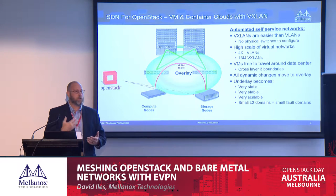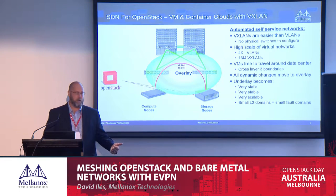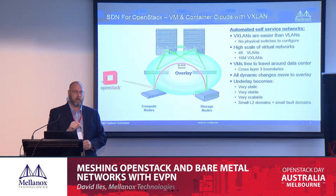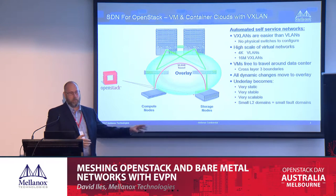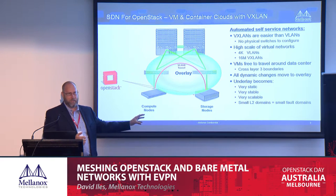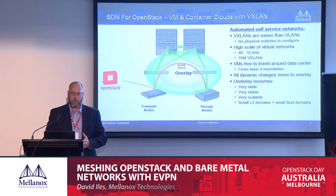As soon as something goes wrong with your data center network, the first thing you do is see what changed — who made a configuration change. There's good business just in keeping logs of who changed what and when, so you can go back and say 'that's why things broke.' People really like this idea of the physical network staying pretty static — it actually became more stable by doing that.